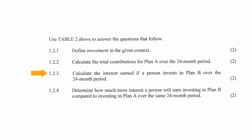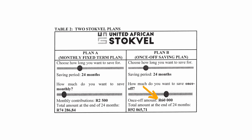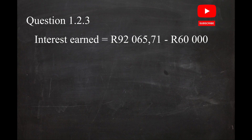In question 1.2.3, you have to calculate the interest earned if the person invests in Plan B over a period of 24 months. From the table for Plan B, the total contribution is R60,000 and the total amount earned over 24 months is R92,065.71. So the interest earned is R92,065.71 minus R60,000, which equals R32,065.71.